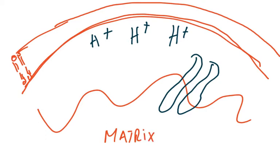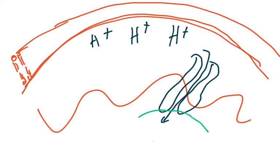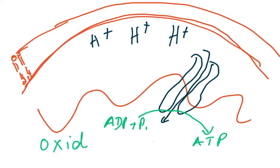There is only one way through which they can pass, and that is through the ATP synthase. When the hydrogen ions come down through the ATP synthase, they help catalyze a reaction where ADP and inorganic phosphate combine to form ATP.